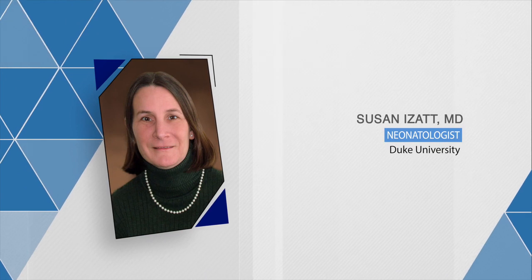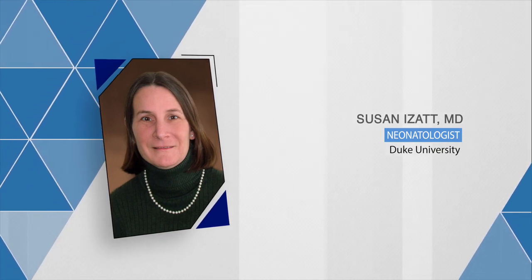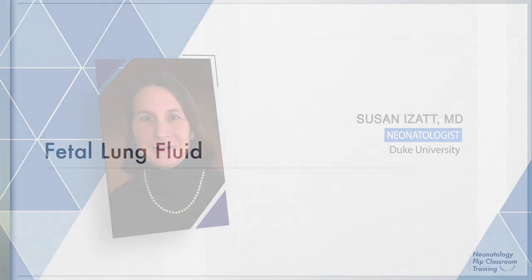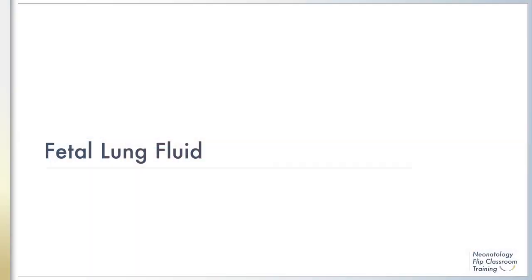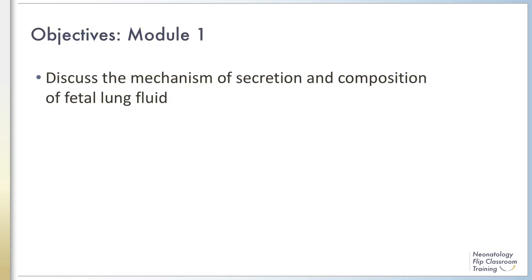This series of modules will provide an overview of fetal lung fluid, including review of the mechanisms of manufacture and clearance of fetal lung fluid, and a brief discussion of neonatal pulmonary pathophysiology attributed to abnormal fetal lung fluid clearance. Module 1 will focus on the composition and secretion of fetal lung fluid. By the end of the first module, the learner will be able to discuss the mechanism of secretion and composition of fetal lung fluid.